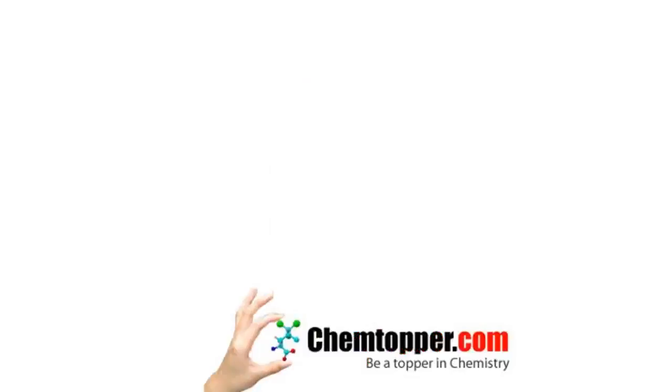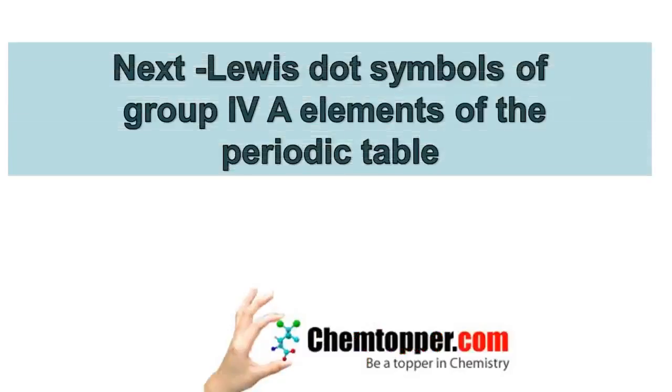In this tutorial, we have learned about making of Lewis dot symbols of group 3 elements. In the next tutorial, we are going to learn how to draw Lewis dot symbols of group 4 elements. If this video has been helpful to you, please click on subscribe and like icon below the video and share it with your friends on Facebook or Twitter. If you want to learn chemistry online from me or for more chemistry resources, please visit my website www.chemtopper.com.